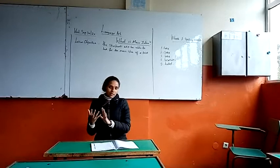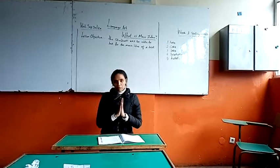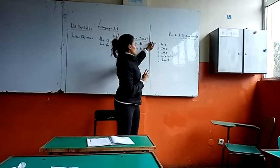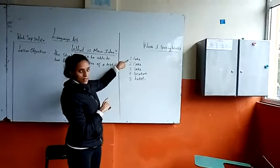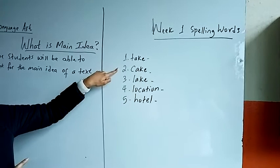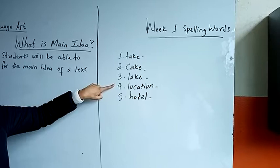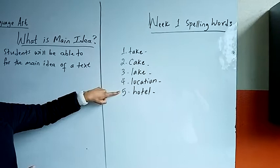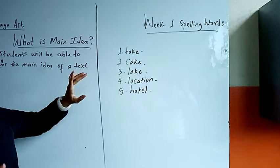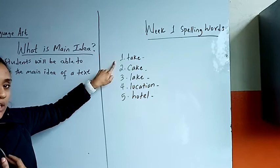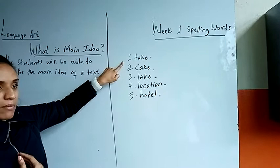Now let's quickly move to the spelling part of today's lesson. We have five spelling words. The first word is 'take.' For example: I take my book from my friend.